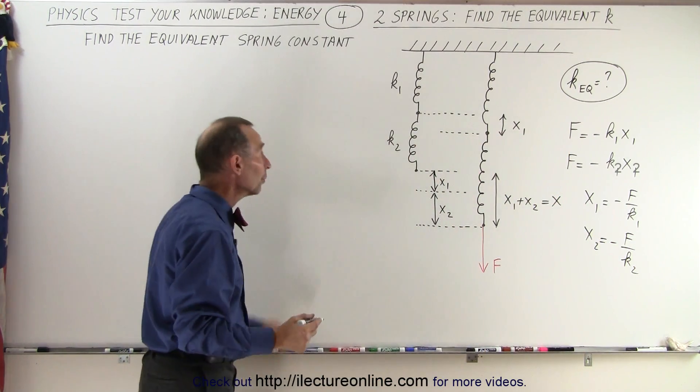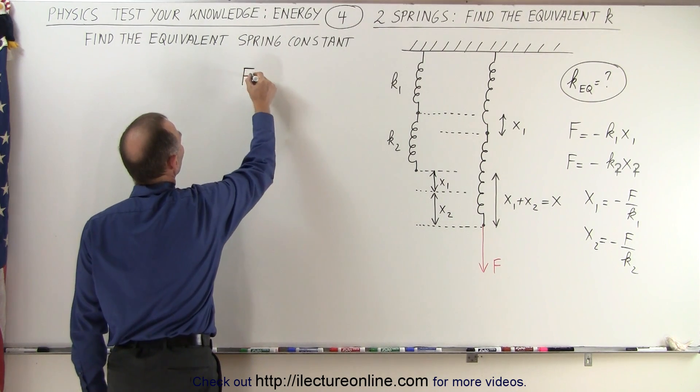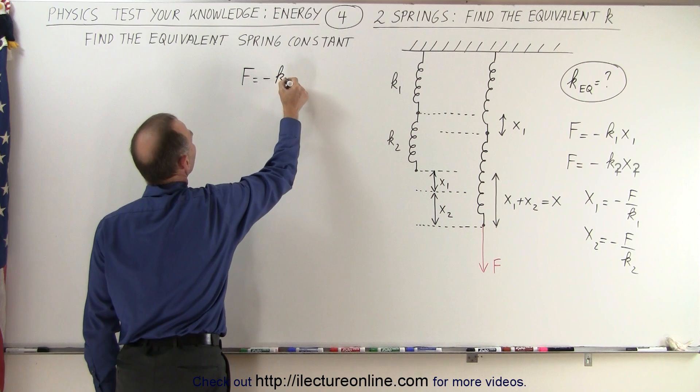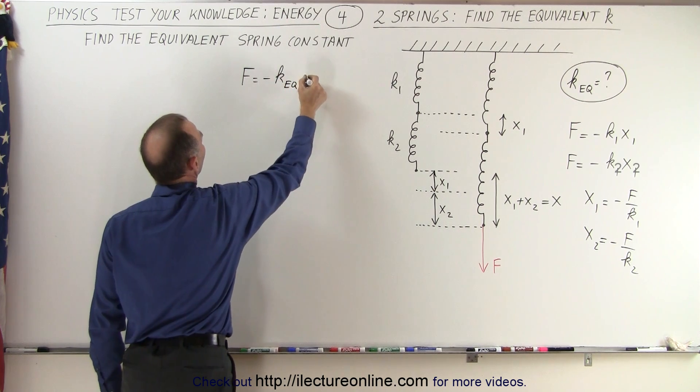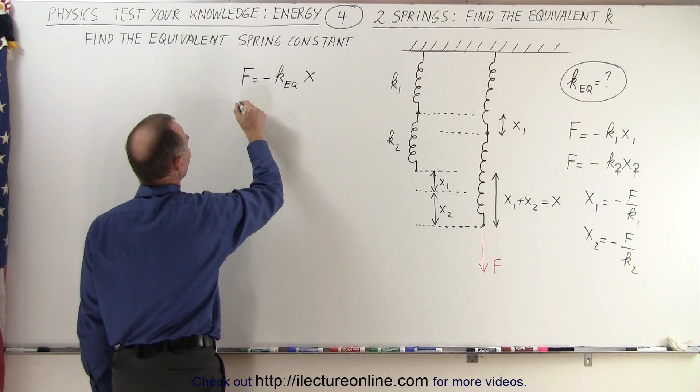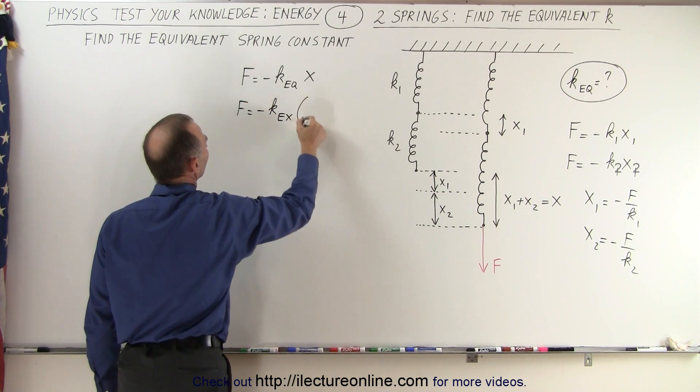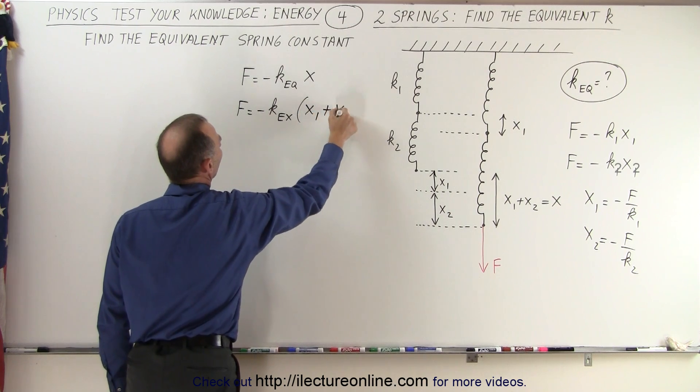And then finally we can write that for the equivalent spring system, we can say that F is equal to minus k equivalent times x, where x is the sum of the two, so we can say that F is equal to minus k equivalent times the sum of x1 plus x2.